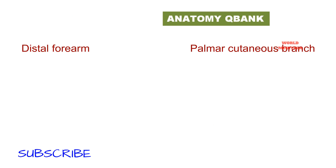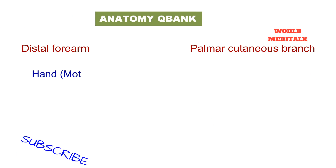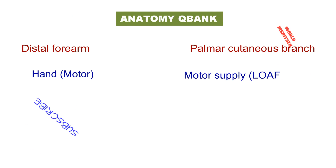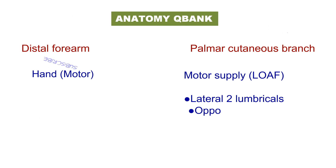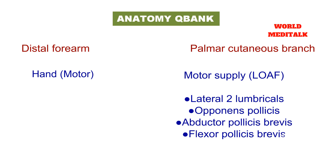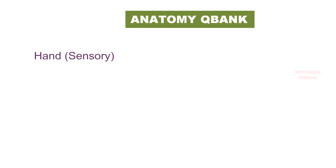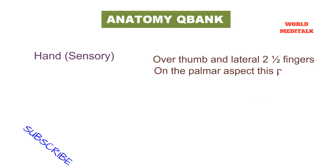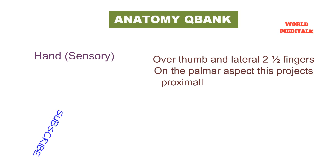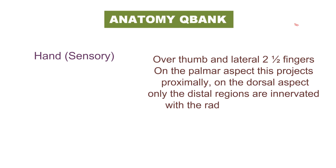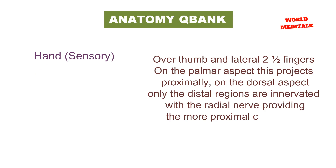In the distal forearm, there is a palmar cutaneous branch. In the hand, there is both motor and sensory supply. The motor supply goes to the lateral two lumbricals, opponens pollicis, abductor pollicis brevis, and flexor pollicis brevis. Sensory supply covers the thumb and lateral two and a half fingers. On the palmar aspect, this projects proximally. On the dorsal aspect, only the distal regions are innervated, with the radial nerve providing more proximal cutaneous innervation.